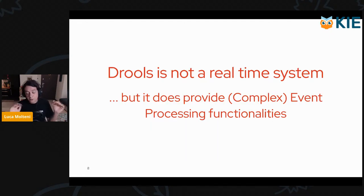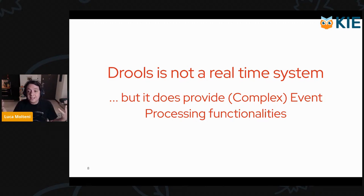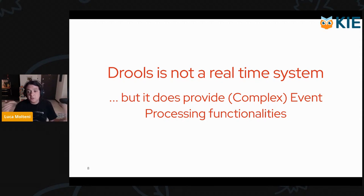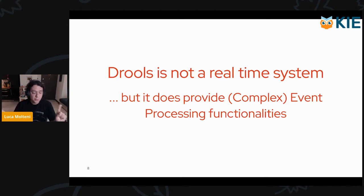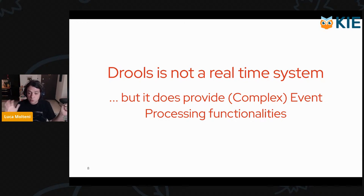Drools is mostly a rule engine. It's not an end-to-end real-time solution — it's not intended to provide guarantees of delivery time similar to a stock trading system. But Drools does execute a lot of rules very fast, and it provides tools to process events by writing rules in the same language used for business rules, which is DRL — Drools Rule Language. Today we're not seeing the details of DRL, but you can find my other Key Live on the YouTube channel where we covered all the details regarding DRL.